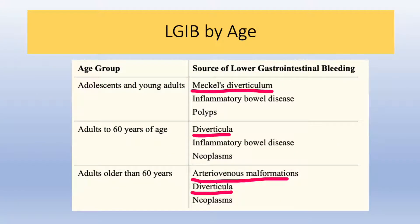We can now review the etiologies of massive lower GI bleeds. Lower GI bleeding can be broken down by age, with Meckel's diverticula, inflammatory bowel disease, and juvenile polyps encompassing the majority of bleeds in adolescents and young adults. Diverticular bleeds, inflammatory bowel disease, neoplasms, and arteriovenous malformations make up the bleeds in adults and older adults. The conditions most commonly resulting in massive lower GI bleeds are underlined in red.